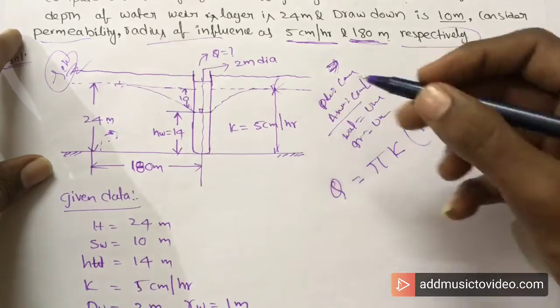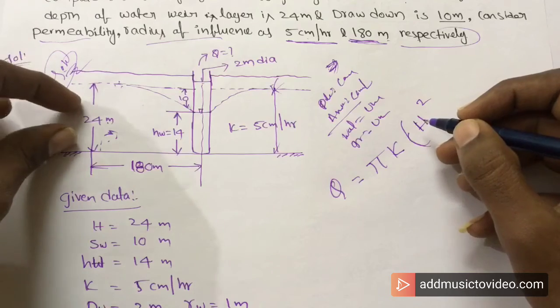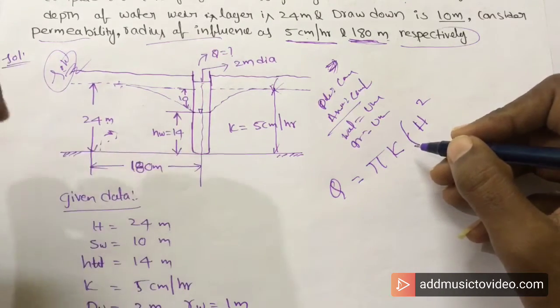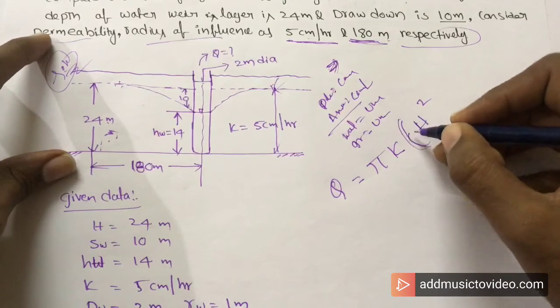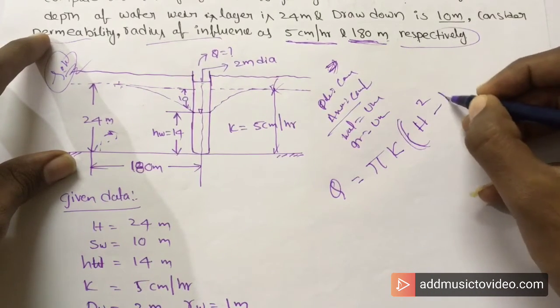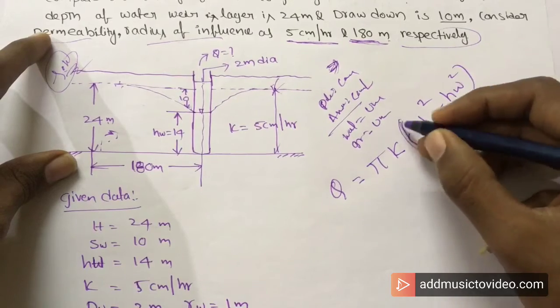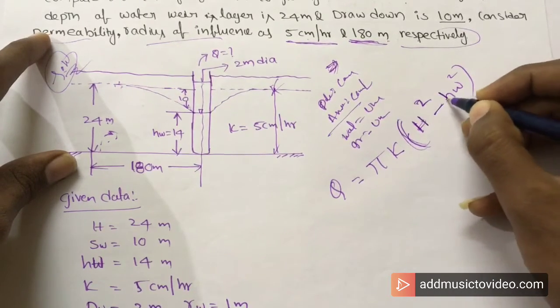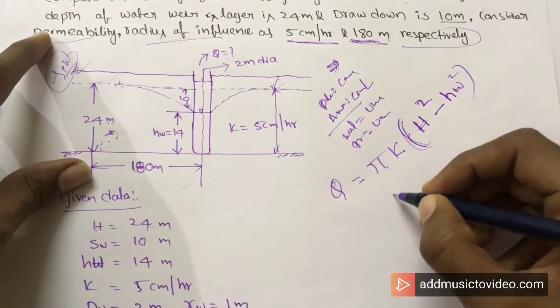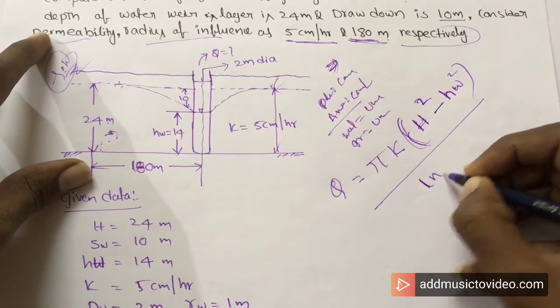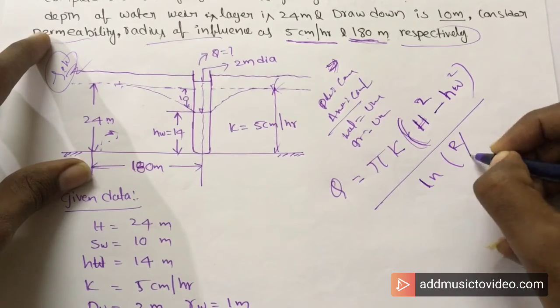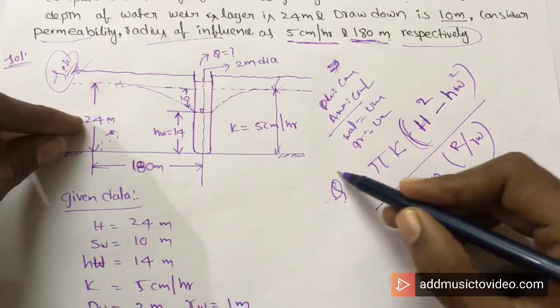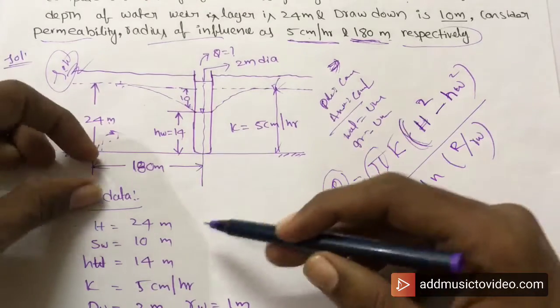To calculate the flow rate, the formula is Q equals k times h2 squared minus h1 squared, divided by natural log of radius of influence divided by radius of well.